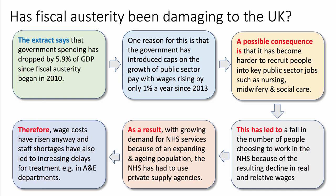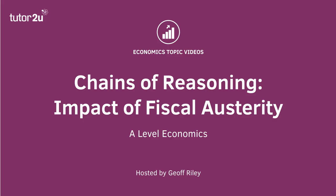Notice those phrases highlighted in red — 'a possible consequence,' 'this has led to,' 'as a result,' 'therefore' — those are the little connective words and phrases that will help you build a fantastic chain of reasoning. Once you've done a chain of reasoning, the next paragraph is evaluation. Good analysis opens the door to strong evaluation.